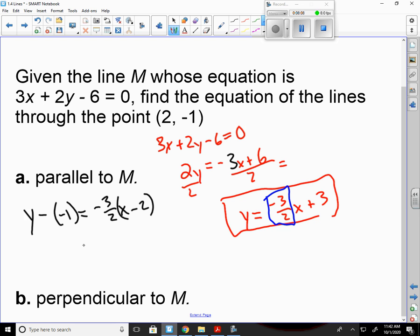On this side, I distribute. On this side, I get rid of my negatives, because it's minus a negative. So it's going to be y plus 1 equals negative 3 halves x plus 3.